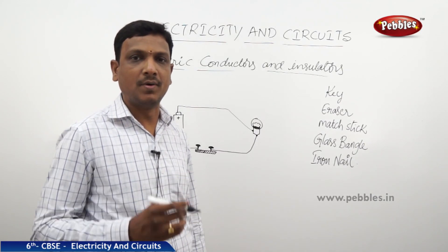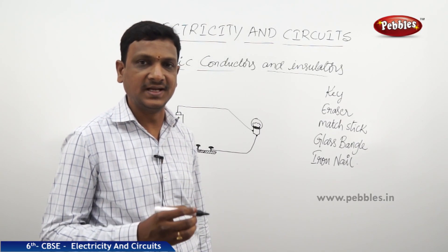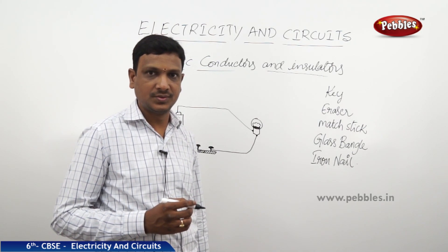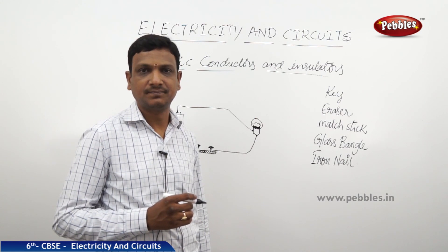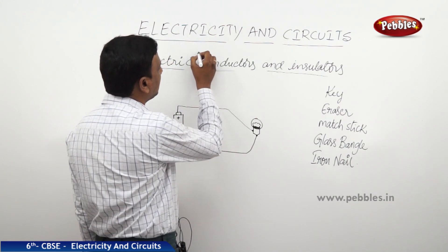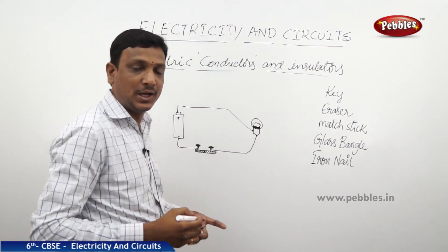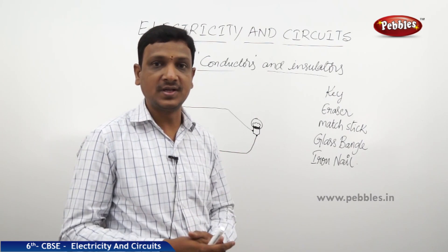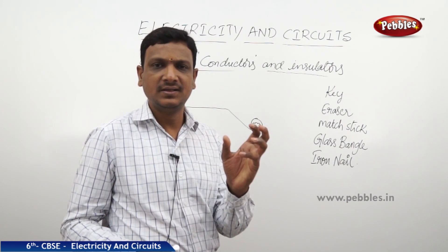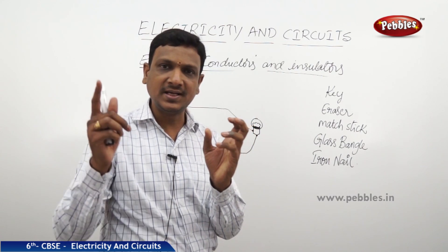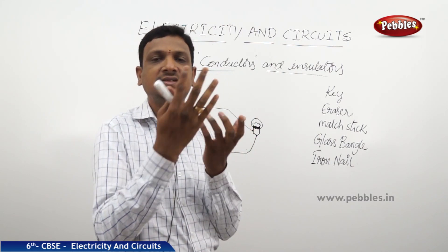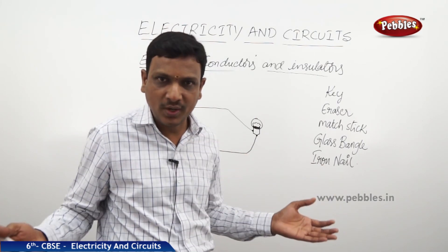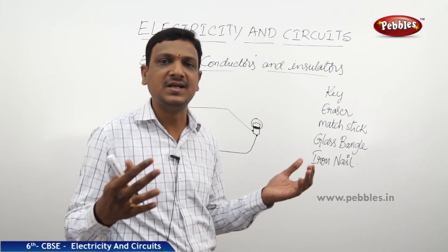Now let us see another important topic of electricity — that is all about the materials that are used to conduct electricity. The materials that can conduct electricity, that means that allow the electricity to pass or flow through them, those are conductors. If any material is allowing the electricity to pass through it, it is a conductor. If a material is not allowing the electricity to pass through it, it is an insulator.